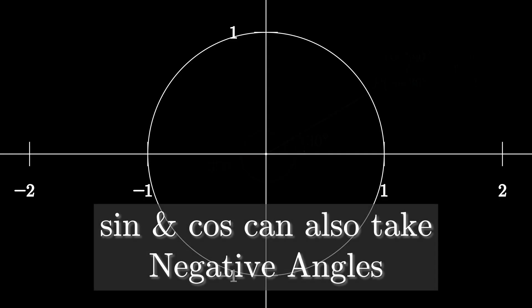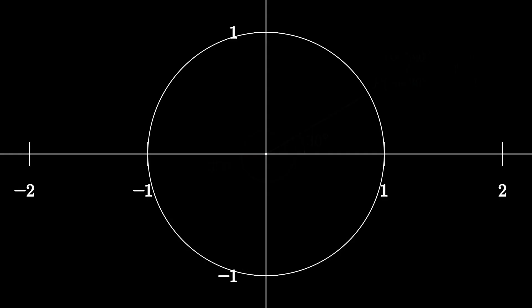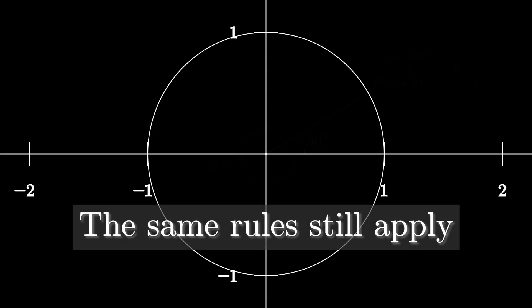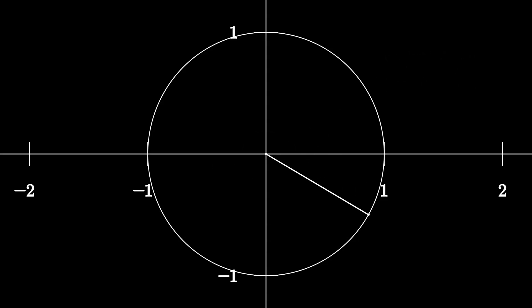Sine and cosine can also take negative values. When we rotate the triangle clockwise, we're creating negative angles. But there's no need to worry, the same rules still apply. For example, cosine minus 30 and sine minus 30 are exactly the same with cosine 330 and sine 330. That's because the triangle ends up in the same position on the unit circle. We're just approaching it from the opposite direction.